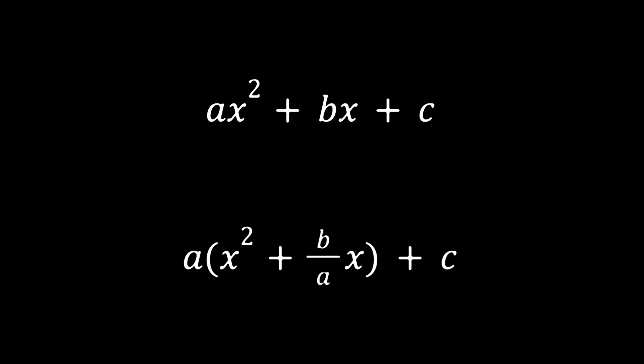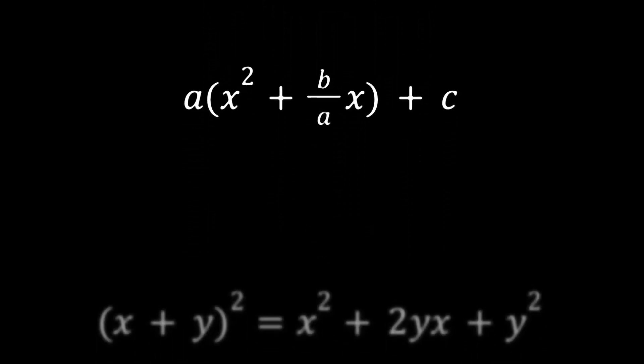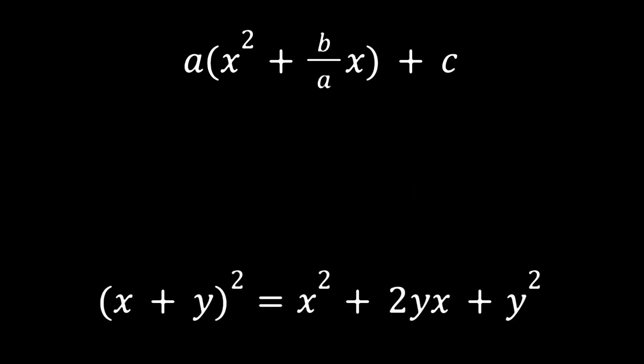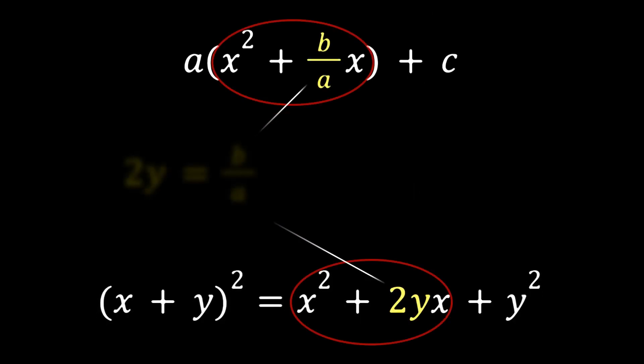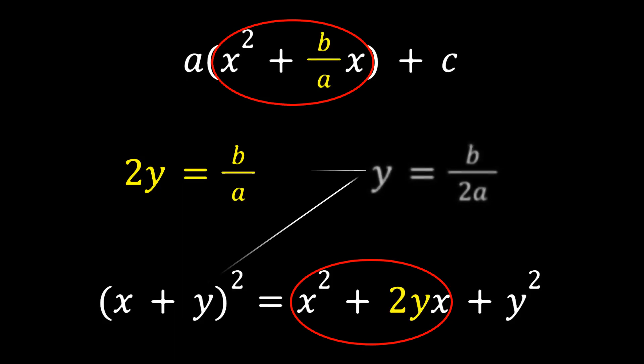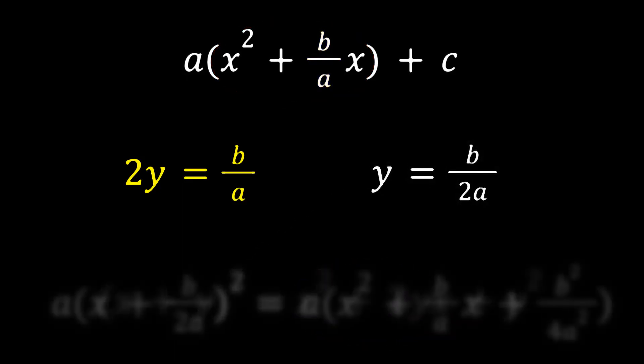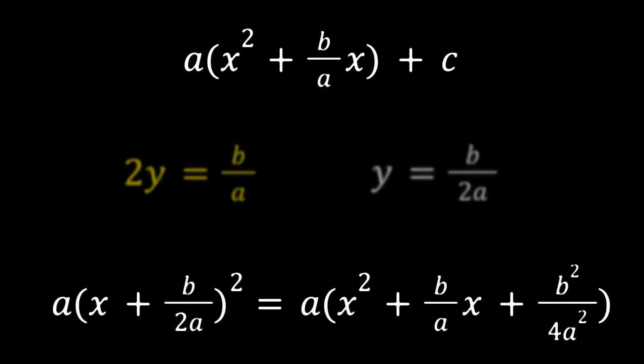Completing the square requires finding a way to see this as an altered version of a perfect square, which would look like this. In this particular case, 2y equals b over a, so y equals b over 2a. So really the square we're trying to complete is this one.